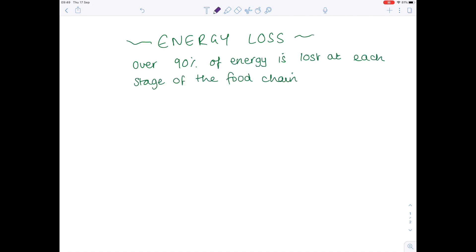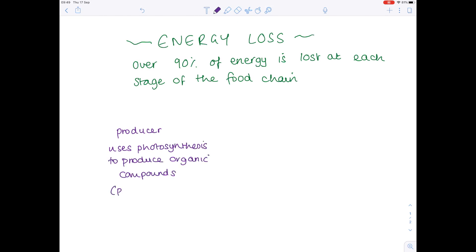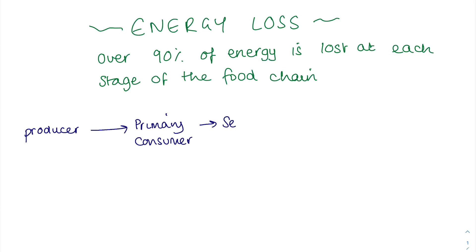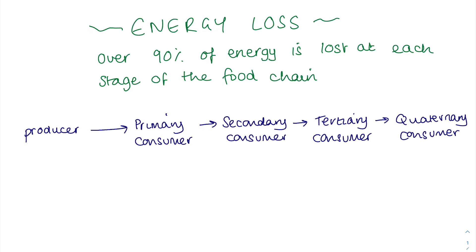Just to remind you of the structure of a food chain, remember that they start with a producer, which uses photosynthesis to produce organic compounds. That's plants, algae, and photosynthetic bacteria — only those ones, not all bacteria photosynthesize. The next stage is the primary consumer, followed by a secondary consumer, then a tertiary consumer, and then finally a quaternary consumer.